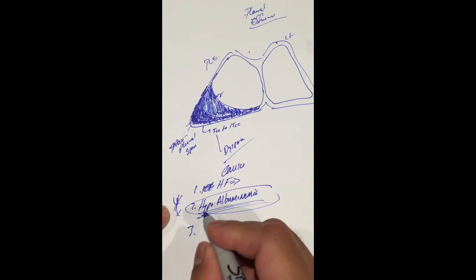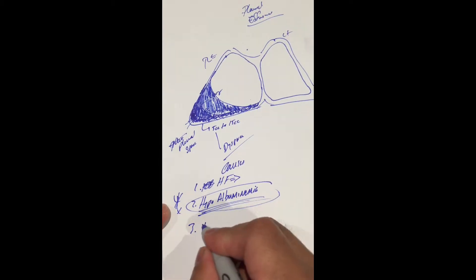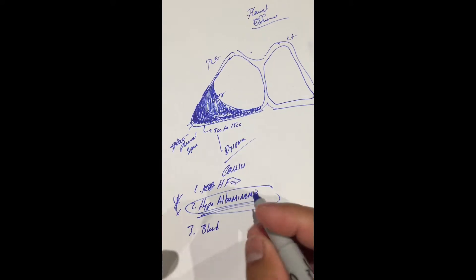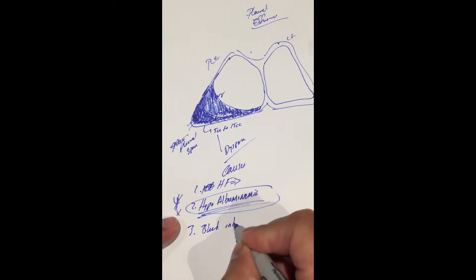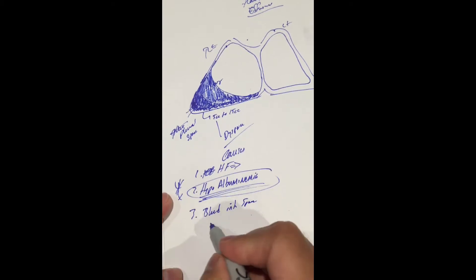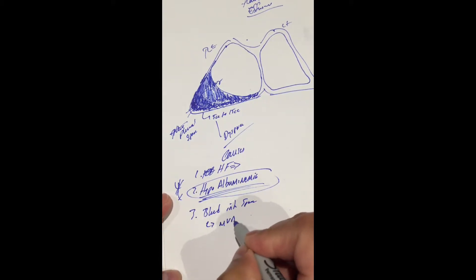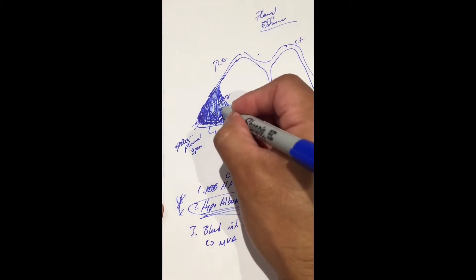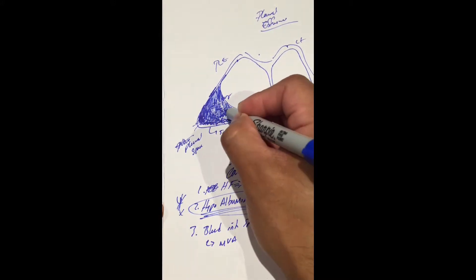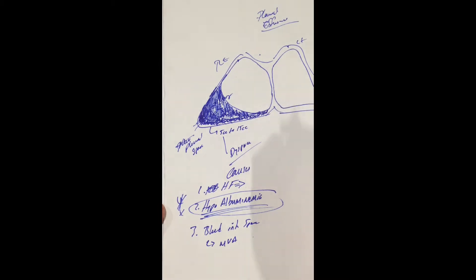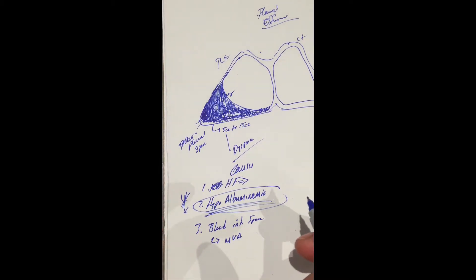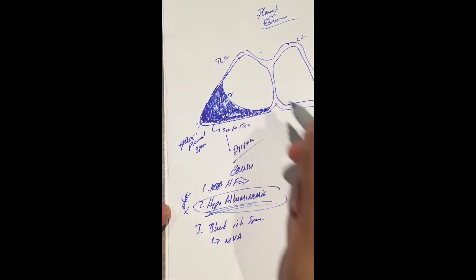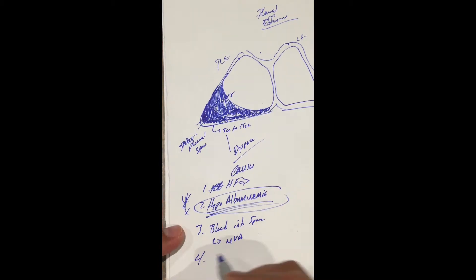Number three: some type of bleeding into that space. Maybe the patient was involved in an MVA, had some type of rib fracture. That would again cause bleeding to occur and that blood would accumulate in the pleural space, again making it difficult for the patient to breathe due to this pressure.